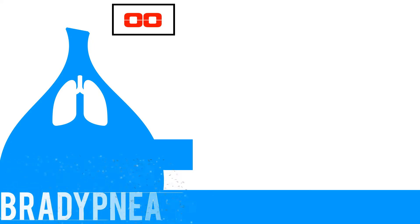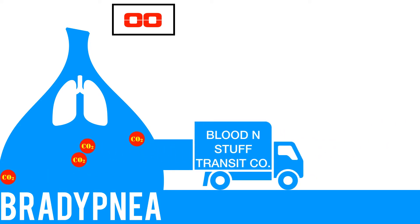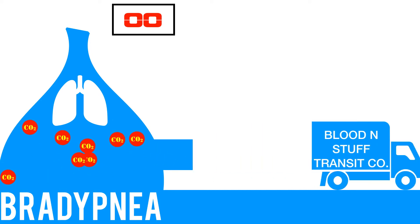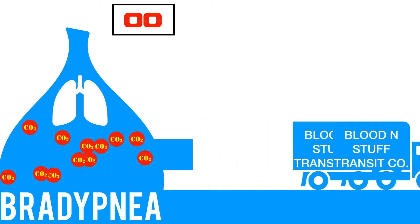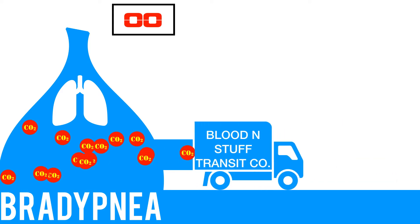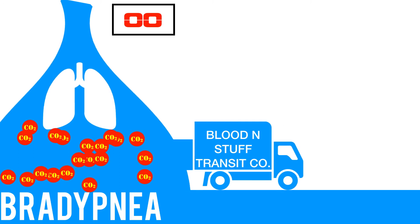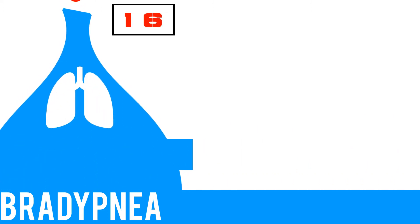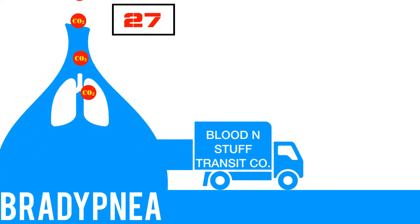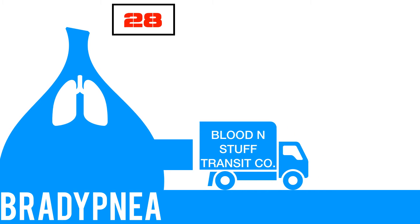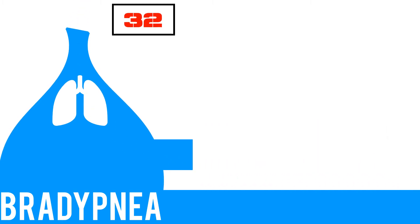Bradypnea — slow breathing. Because of the slower rate of breathing, we've got plenty of time to collect CO2 before it gets shipped out, and you can see that before inhalation even happens, we've got quite a bit of CO2 molecules stacked up in the lungs and ready to be exhaled. At the end of exhalation we've gotten up to 32. Because of that slower rate, more of it collected, and more of it got measured as it came out.